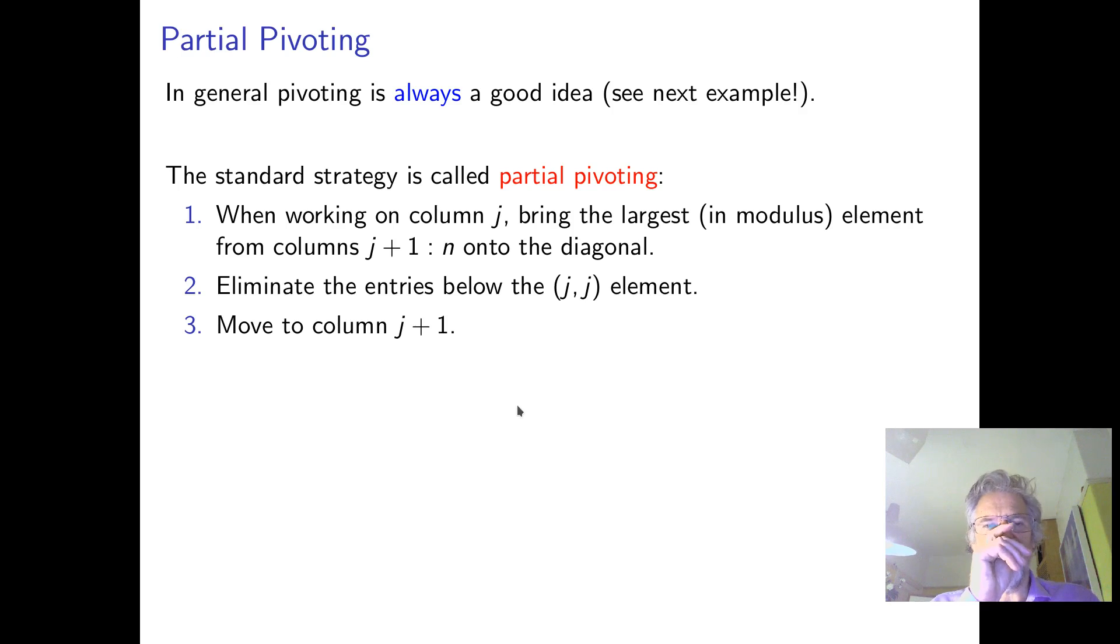In general, pivoting is a good idea. Well, actually, if you're doing it by hand or if you're doing it with fractions, then you probably want to do some tricks to keep the fractions as simple as you can. But generally, on a computer, we're using floating point arithmetic. And in that case, to prevent errors due to rounding of the numbers, we want to use the biggest number that we can. So it's called partial pivoting, Gaussian elimination with partial pivoting.